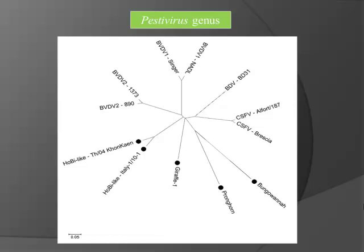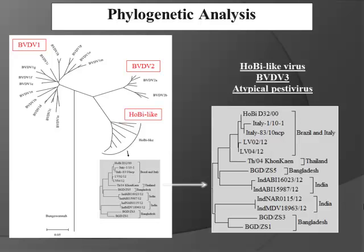In phylogenetic analysis, BVD1 is quite spread out — we have subgenotypes ranging from BVD1a to BVD1t. BVD2 is not quite as spread out; we have 2A and 2B. Hobi-like viruses are more spread out than the BVD2s at this point. We think we may have two groups: one that is an Asian group, and one that is a European/South American group.